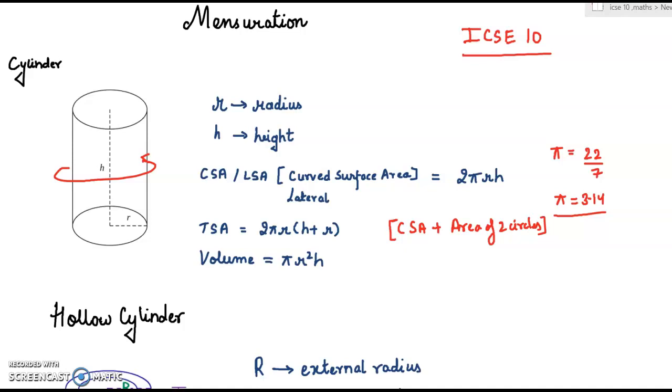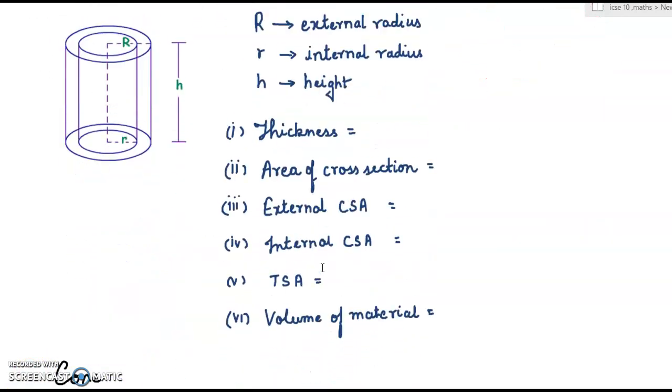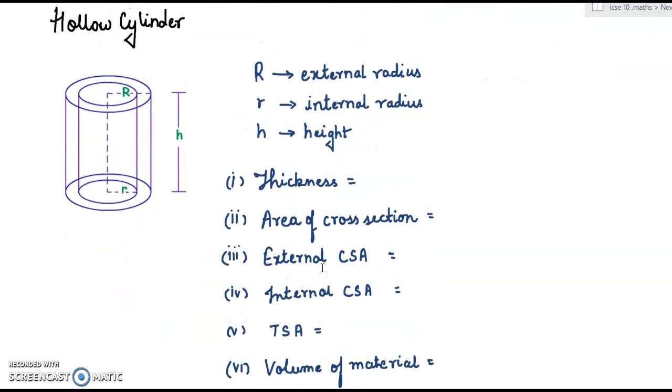Now we will move on to hollow cylinder. You can see that there is a cylinder inside a cylinder. Now it has all the formula similar to the original cylinder. You just have to put both radius of cylinders. R is the external radius, the outer cylinder and its radius. Then small r is the radius of the inner cylinder, internal radius. H is the height of the cylinder, which is same both for the outer and the inner cylinder.